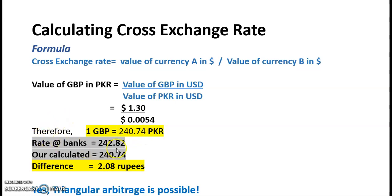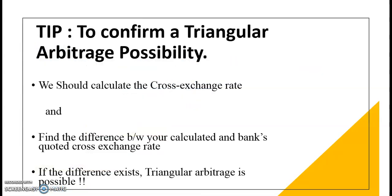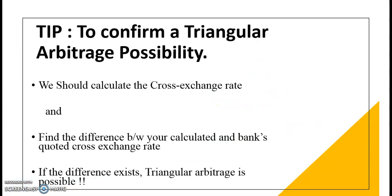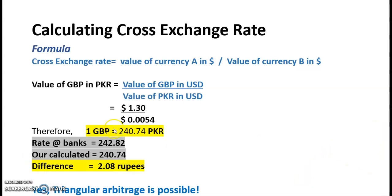The rate given by the banks is 242.82, which is also available in the data. So there is a difference of 2.082 PKR. It looks tiny, but when you have a large amount of cash on hand, even the tiniest differences give a big result. So yes, triangular arbitrage is possible.